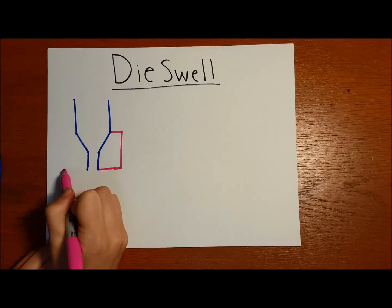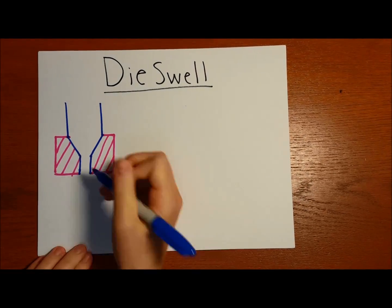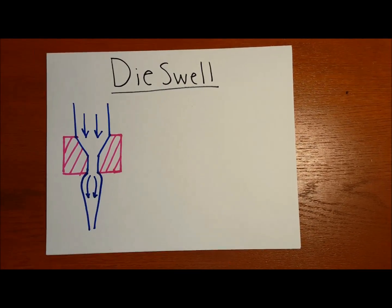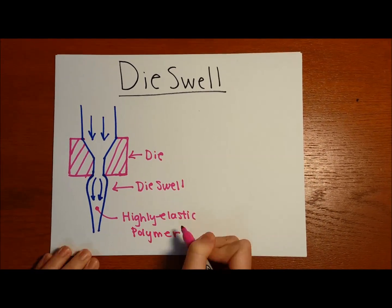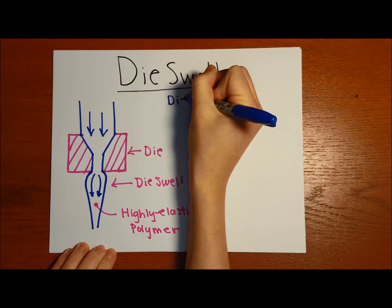Die-swell occurs during polymer processing and is shown in the diagram on the left. A die is a metal conduit with a constant cross-sectional area. The opening is very narrow.